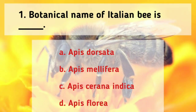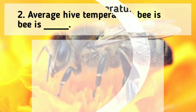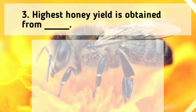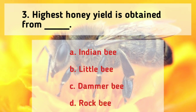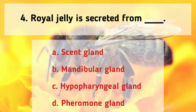The botanical name of Italian bee is Apis mellifera. The average hive temperature of honey bee is 33 to 36 degrees Celsius. Highest honey yield is obtained from rock bee. Royal jelly is secreted from the hypopharyngeal gland.